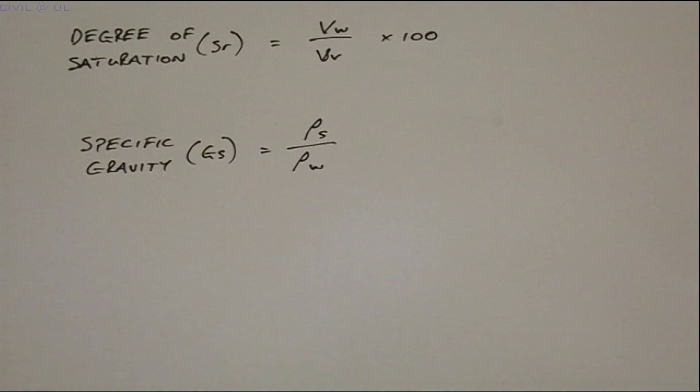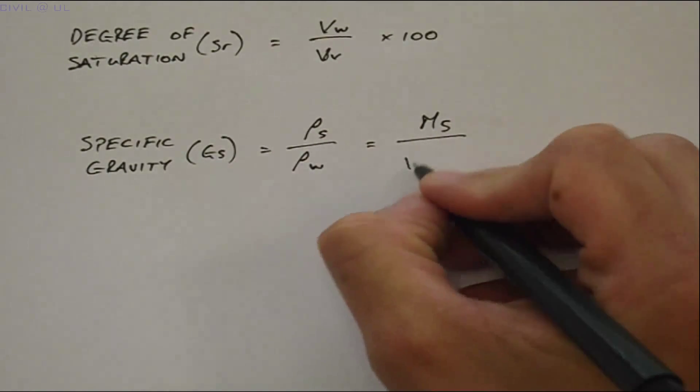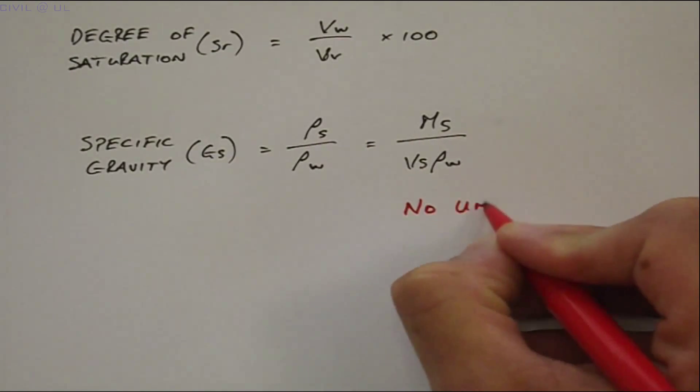Another way of expressing this is the mass of solid divided by the volume of solid multiplied by the density of water. And GS has no units.